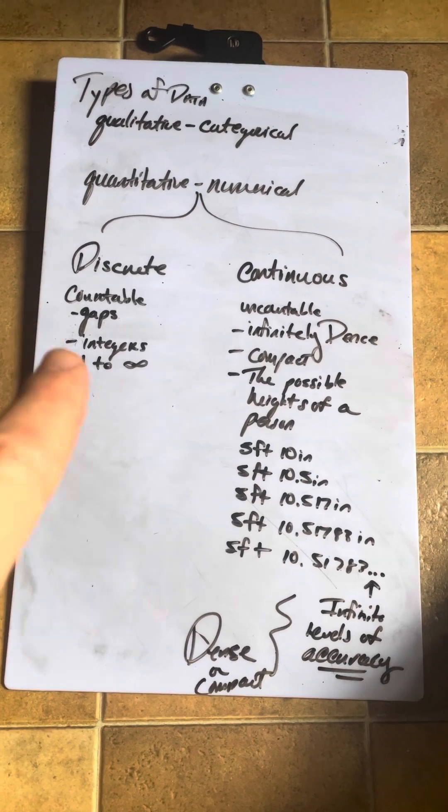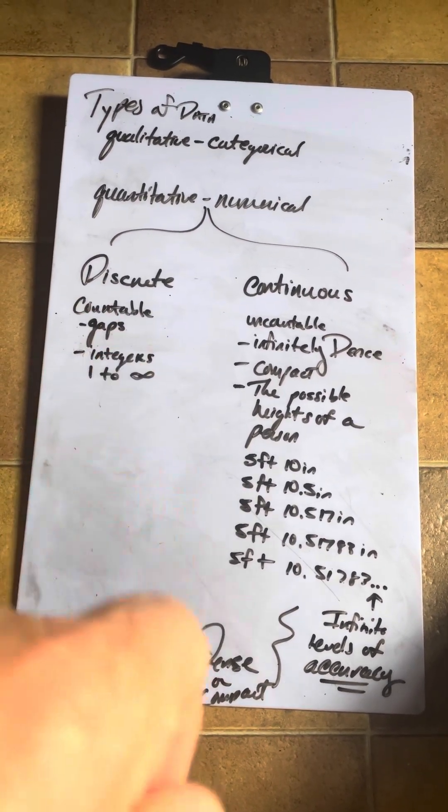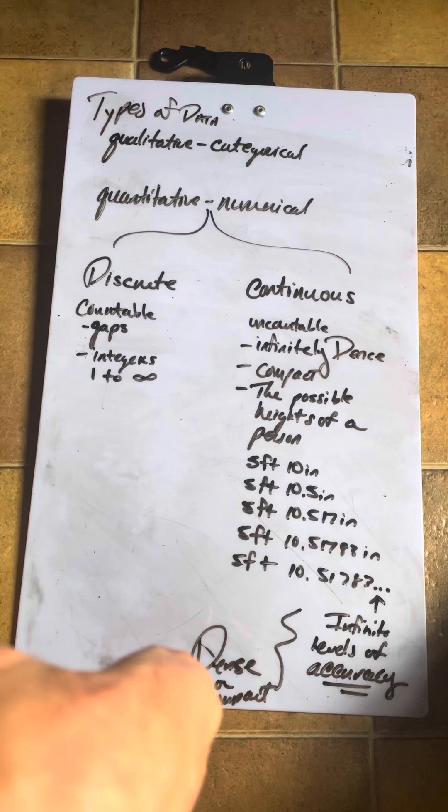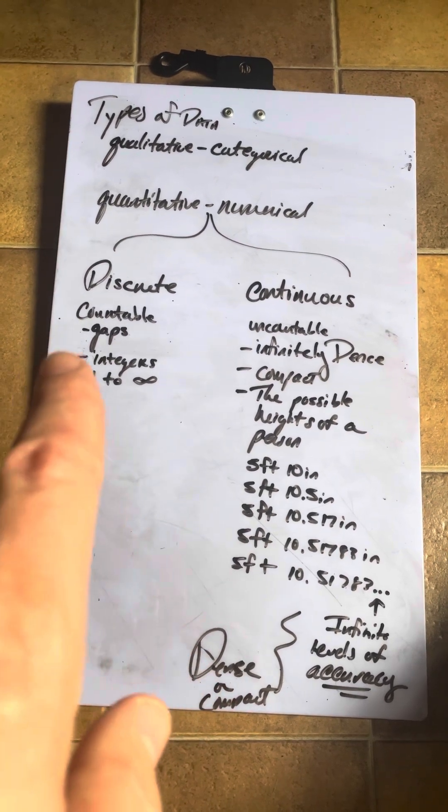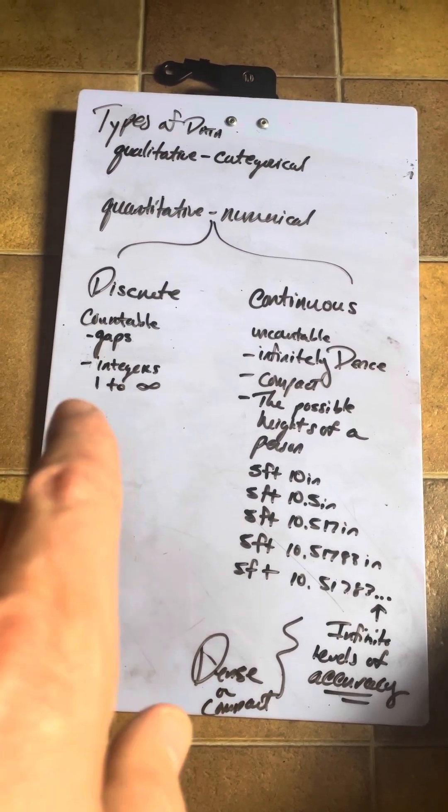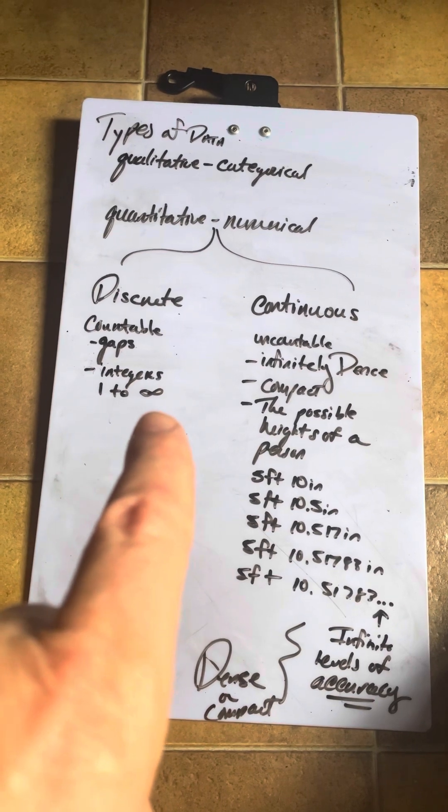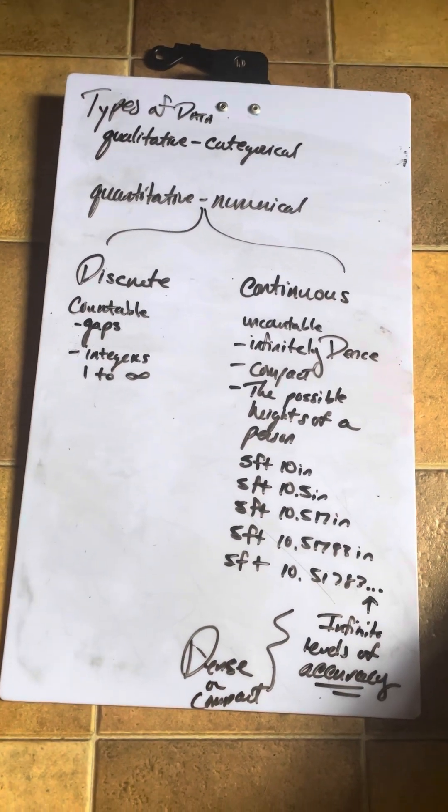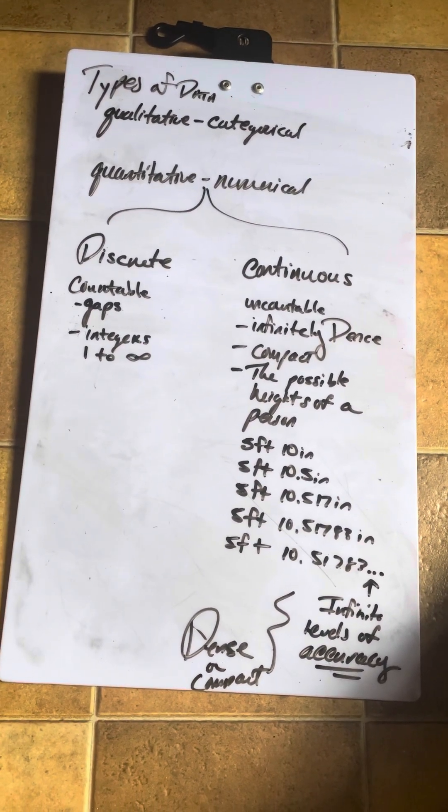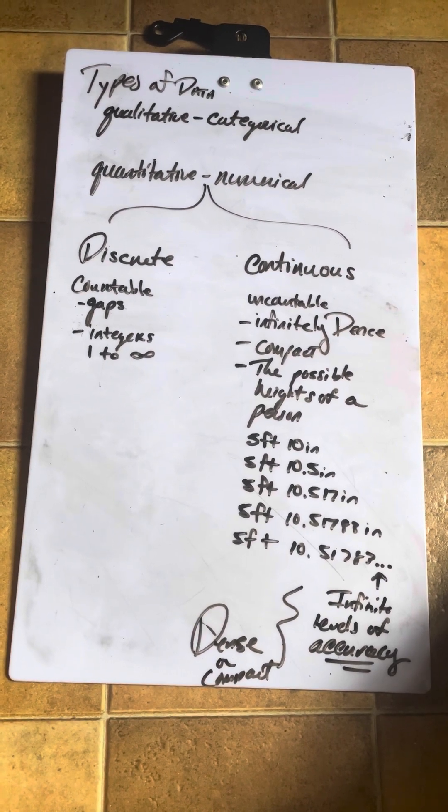Discrete is countable. There are gaps in between the numbers. The integers one to infinity. Now notice I said infinity. Some people will say that a discrete set has to stop. It doesn't.